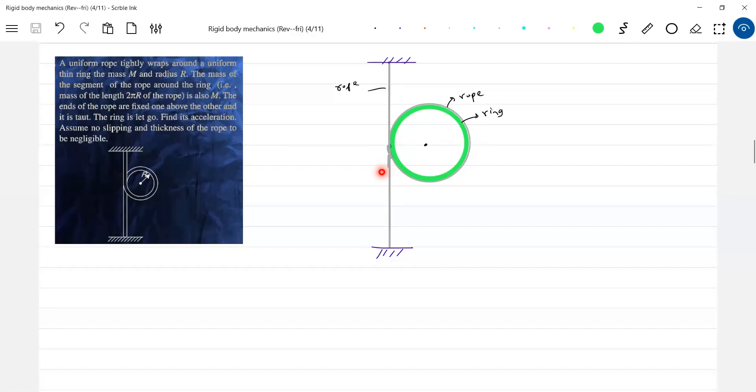So definitely the rope is having a mass. So where will tension be more, at up or down? At the upper part or lower part of the rope? Upper part. At the upper part tension will be more.